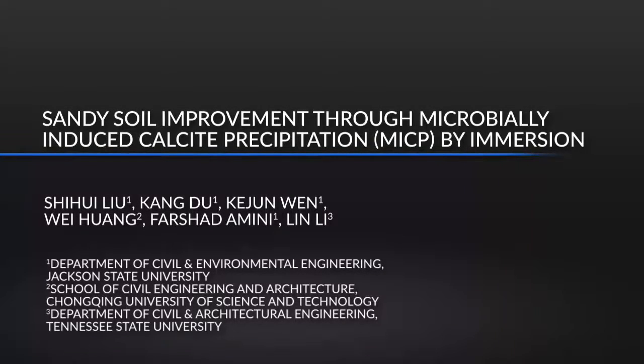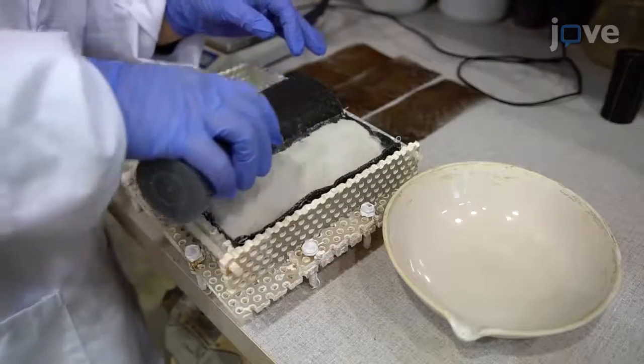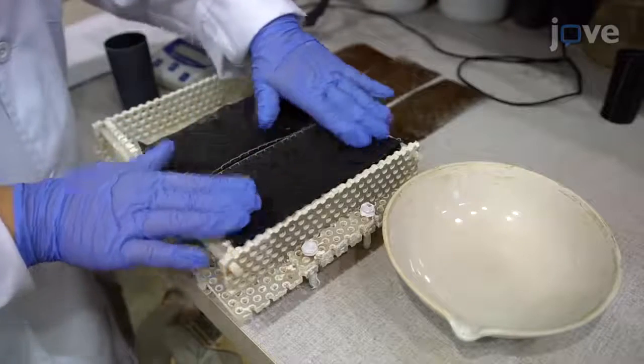The immersing method demonstrated in this protocol helped researchers remove unbroken MICP-treated soil samples for mechanical testing through different modes. This technique helped MICP-treated soil samples get more uniform precipitated calcium carbonate. Those MICP-treated soil samples also get better mechanical properties through this method.